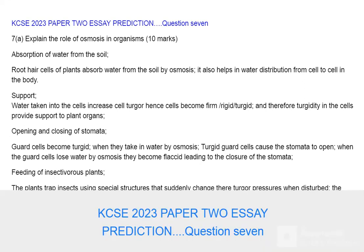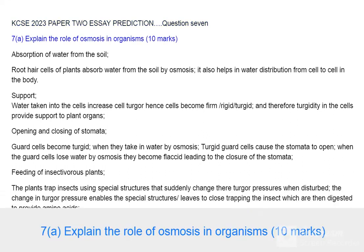KCSE 2023 Paper 2 Essay Prediction, Question 7. Question 7A: Explain the role of osmosis in organisms. 10 marks.